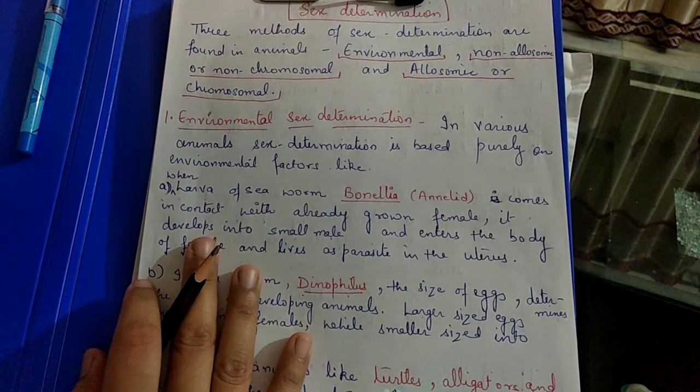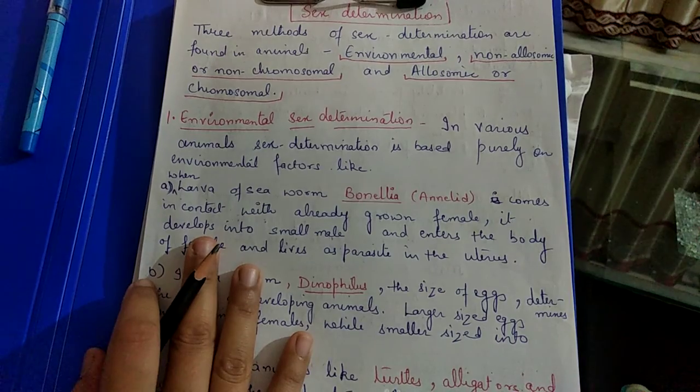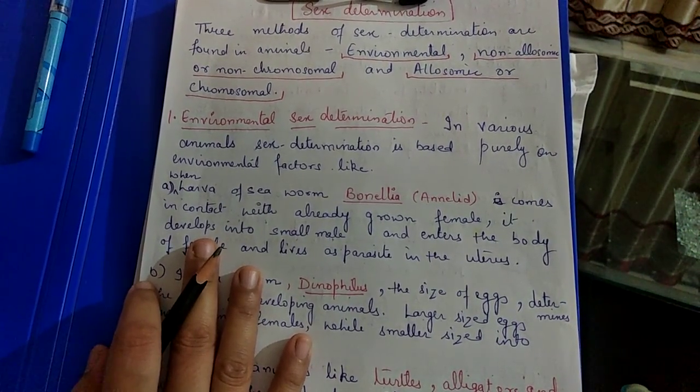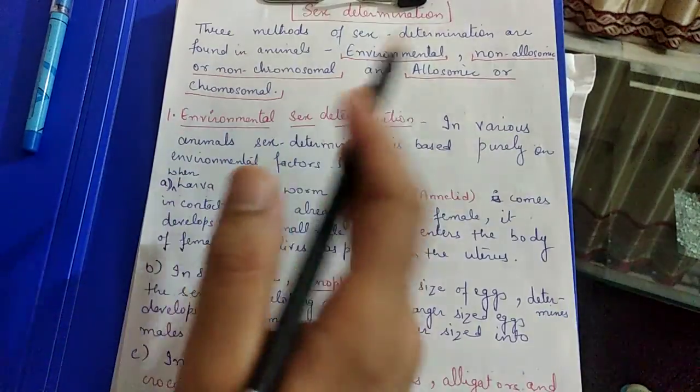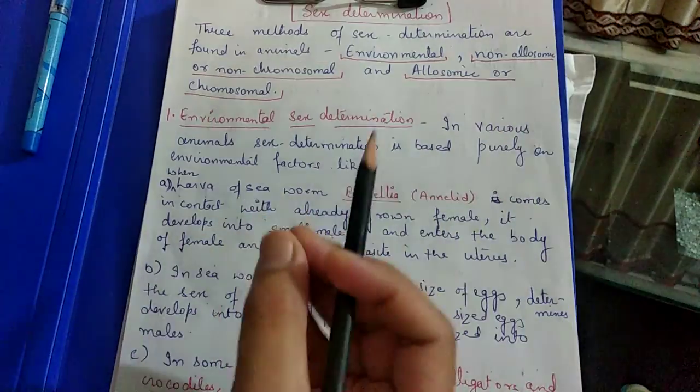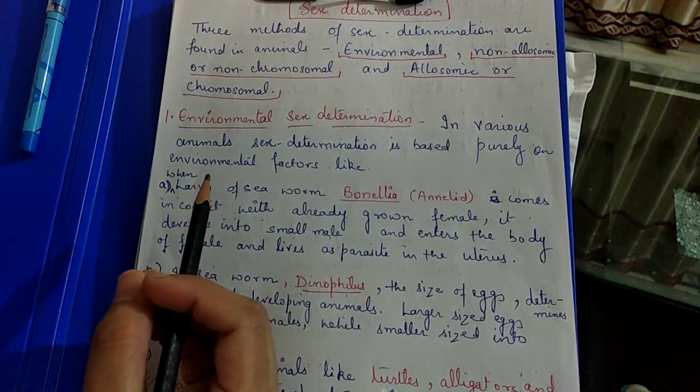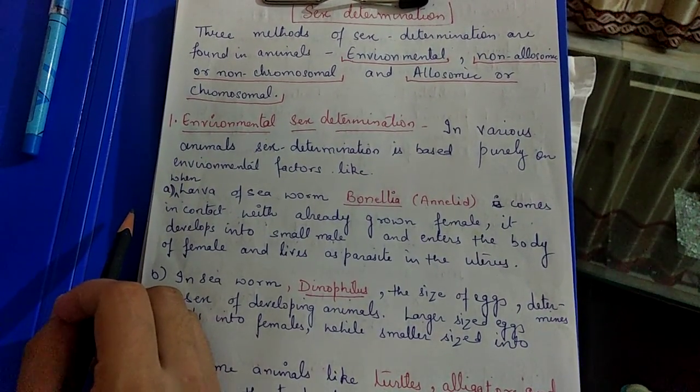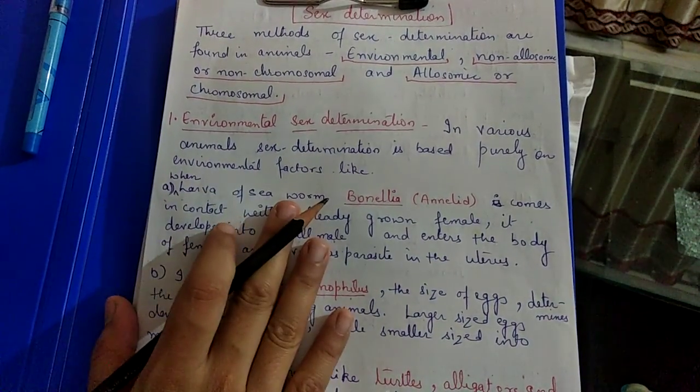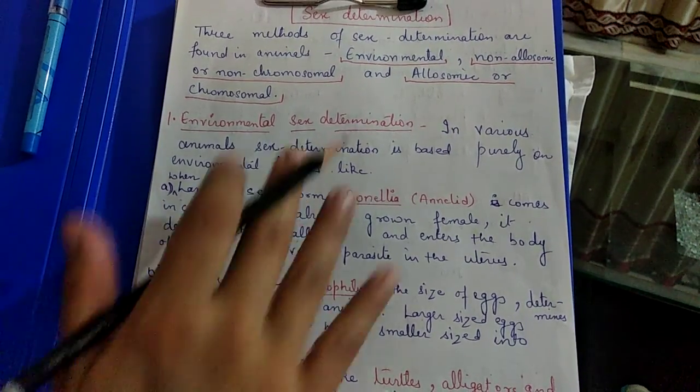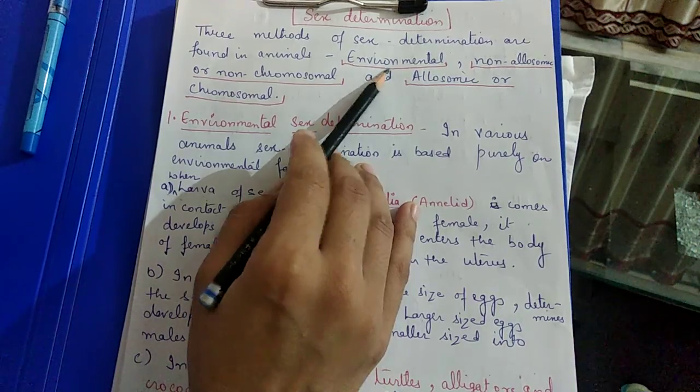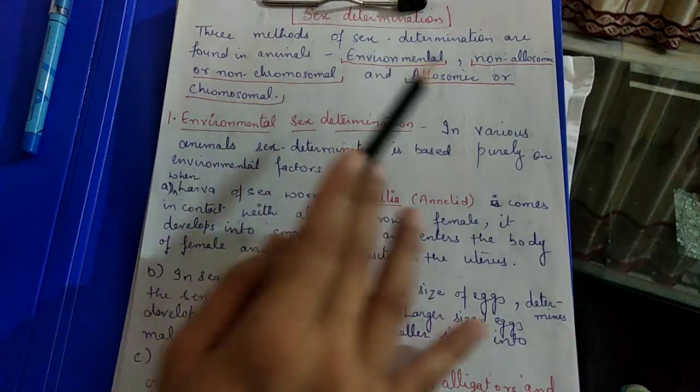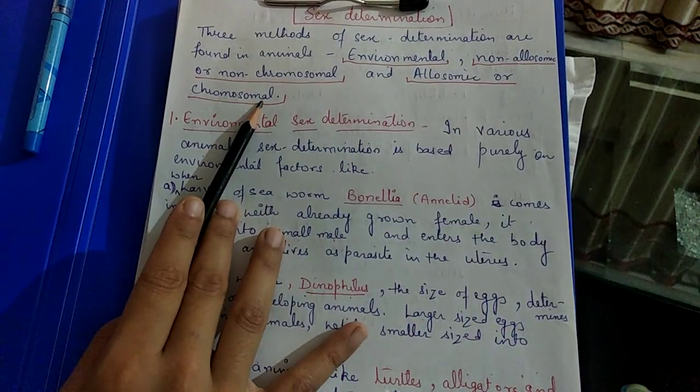Students, today we are going to start with the new topic that is sex determination. There are several methods to determine sex - factors that determine whether an organism will be male or female. Basically we have three methods: environmental sex determination, non-allosomic or non-chromosomal sex determination, and allosomic or chromosomal sex determination.